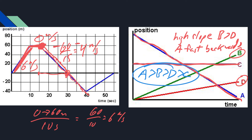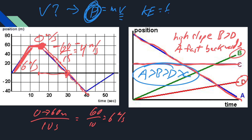One more thing with these questions: sometimes they don't ask directly about velocity — they'll do something more subtle, like how does the momentum compare? Well, momentum is mass times velocity, so you ultimately are finding the velocity. Or maybe they ask about kinetic energy — same thing, you first find the velocity and then you know the kinetic energy. Just be on the lookout for that.